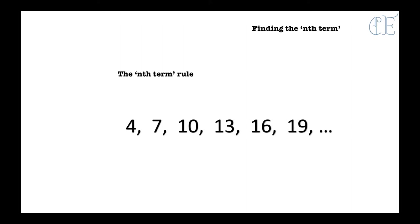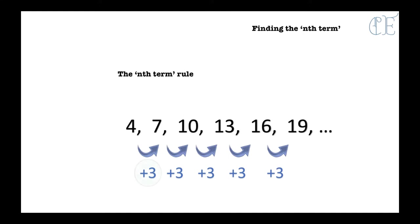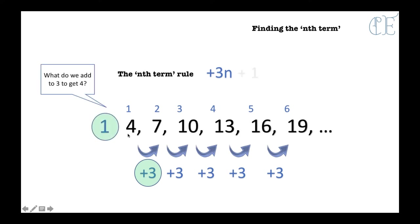Let's look at this sequence to give us something fresh. Let's find the term to term rule — plus 3 again. So that means that our nth term rule starts with 3n. The nth term is going to be an equation that we use to find any number in the sequence. If it starts with 3n, the next bit is to look at the first number in the sequence — this one here is a 4. And you need to think: what do I do to 3 to get to 4? And it's add 1. So we just add 1 to the end.